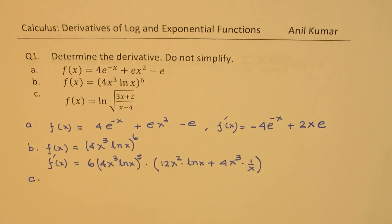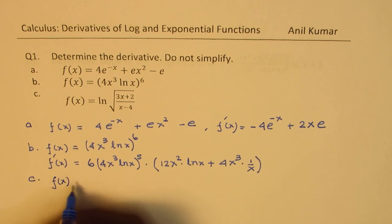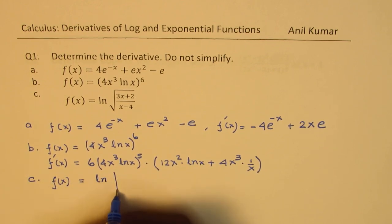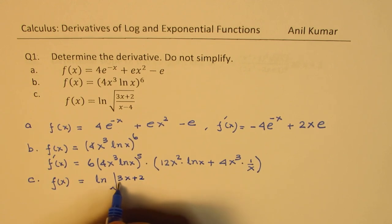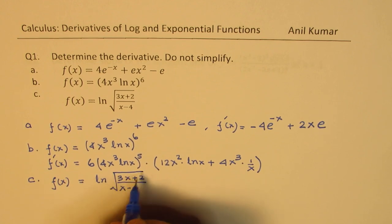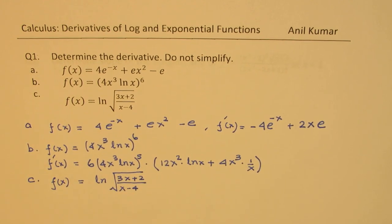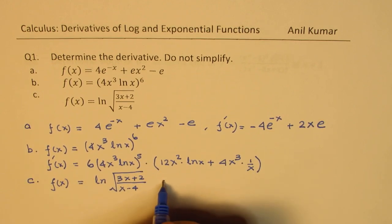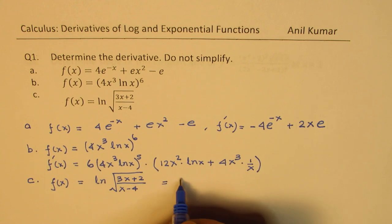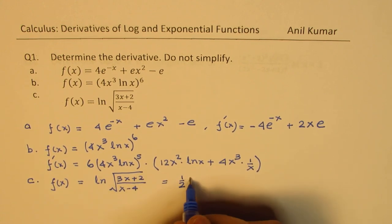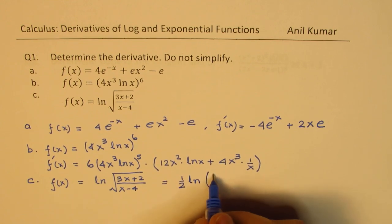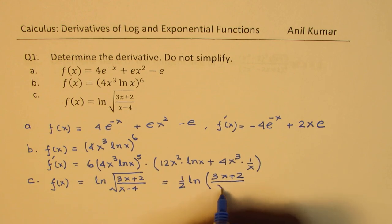Part c: f(x) is equal to ln of the square root of (3x plus 2) over (x minus 4). That square root is like a power of half. The derivative of this function — you write the derivative of ln x which is 1 over whatever is given to you, times the derivative of the inside function. But whenever you have a function like this it is a good idea to first write this as half of ln of (3x plus 2) over (x minus 4).